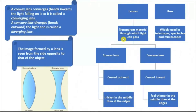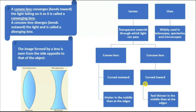Lenses are transparent materials through which light can pass, and there are two types of lenses: the convex lens and the concave lens. The convex lens is curved outward from both sides, and the concave lens is curved inward on both sides.